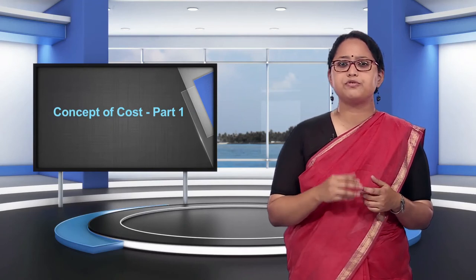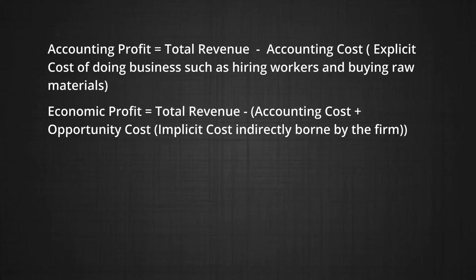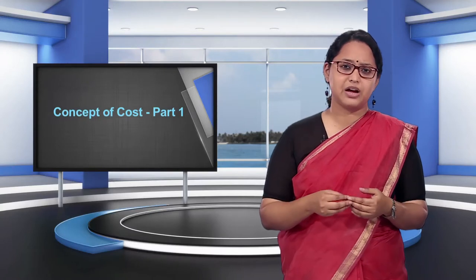Let us talk about profits. From our previous discussion we know of two kinds of profits. Accounting profit is equal to the total revenue minus the accounting cost, which is the explicit cost of doing business such as hiring workers and buying raw materials. Economic profit is equal to total revenue minus the sum of the accounting cost and the opportunity cost, which is the implicit cost indirectly borne by the firm.